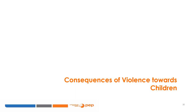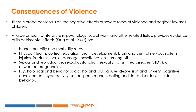We will now explore the consequences of violence towards children. There is a broad consensus on the negative effects of severe forms of violence and neglect, coming from a large amount of literature in psychology, social work, and related fields. This includes higher mortality and morbidity rates, effects on physical health such as cortisone regulation, brain development, brain and central nervous system injuries, fractures, ocular damage, and hospitalizations. It has also been found to affect sexual dysfunction, STDs, and unwanted pregnancies. In terms of psychological and behavioral outcomes: alcohol and drug abuse, depression and anxiety, cognitive development, hyperactivity, school performance, eating and sleeping disorders, and suicidal behavior.